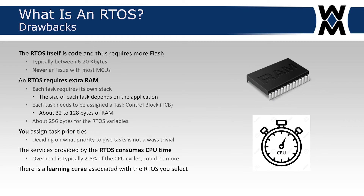There are certainly some drawbacks when using an RTOS. The RTOS itself is code and thus requires more flash — but typically on most MCUs that's not a problem, as it requires between 6 and 20 kilobytes of code space. The biggest problem is that an RTOS requires extra RAM because each task requires its own stack space. The stack pointer is constantly changed from one task to another when the RTOS switches tasks, and you have to calculate how much stack space each task needs — the size depends on the application.